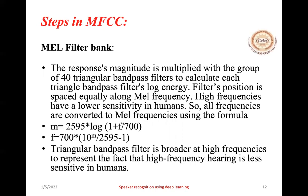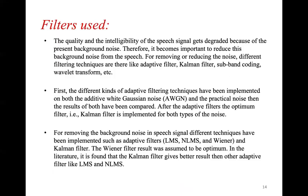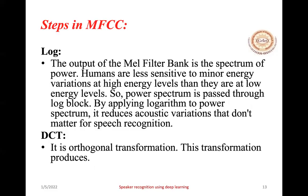In the Mel filter bank step, the magnitude response is multiplied with a group of 40 triangular bandpass filters to calculate each filter's log energy. The equation is: m = 2595 × log(1 + f/700), used to obtain the Mel scale. Then we apply a log: the output of the Mel filter bank is a power spectrum, and since humans are less sensitive to minor energy variations at higher energy levels, the power spectrum is passed through a log block. Finally, DCT — an orthogonal transformation — is applied to produce the MFC spectrum from which we extract the coefficients.